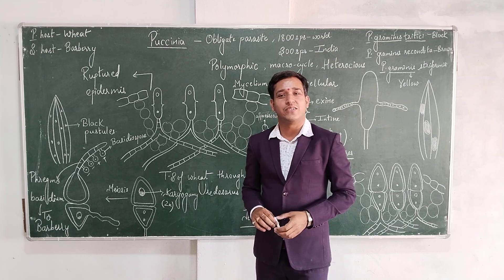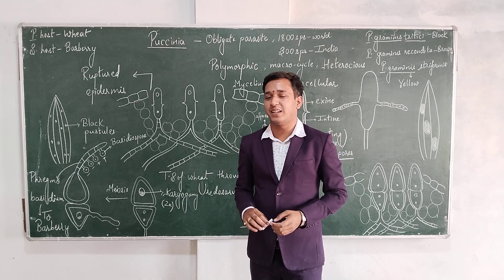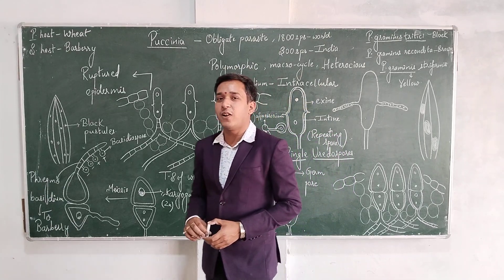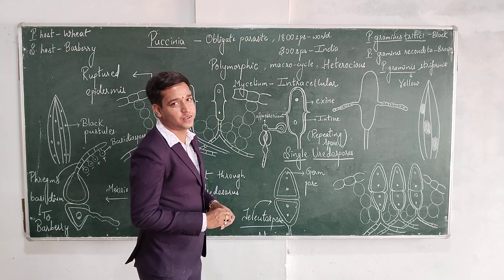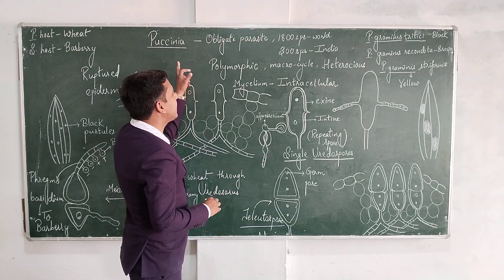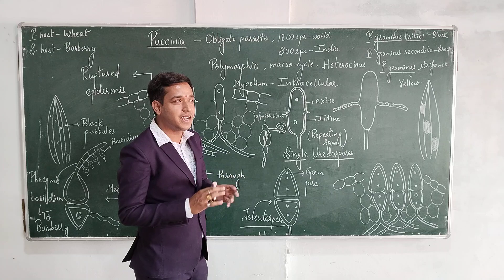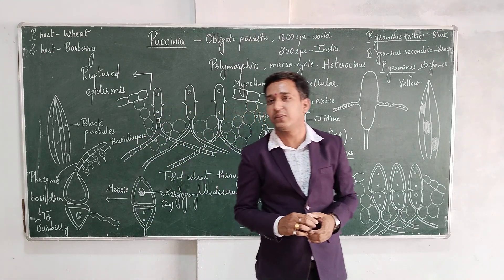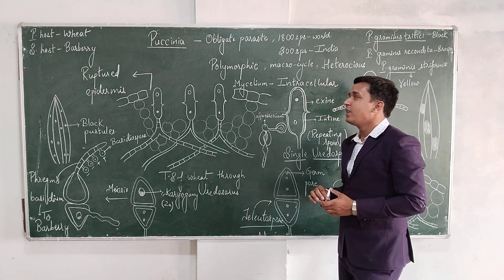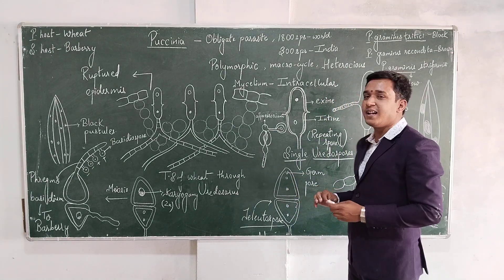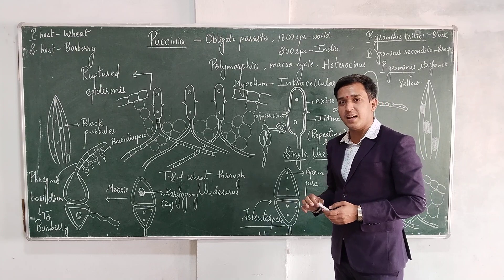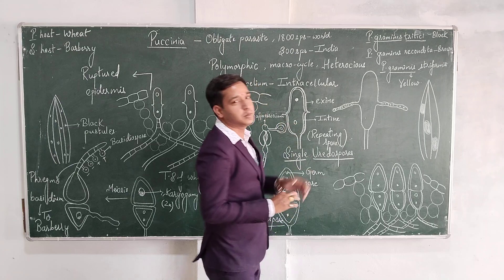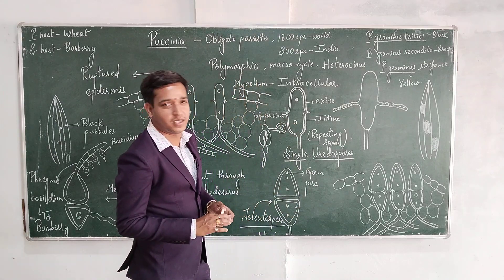Hello students, today we will deal with an important fungus named Puccinia. Puccinia belongs to the class Basidiomycetes. Puccinia is an obligate parasite, meaning it causes infection to a specific plant only. All over the world, 1800 species of Puccinia have been found, and as far as India is concerned, 300 species have been found.